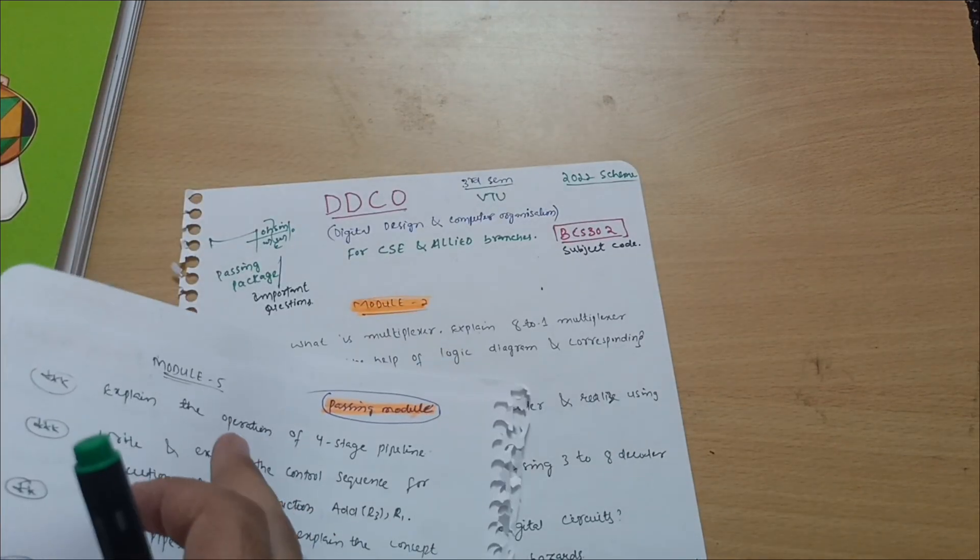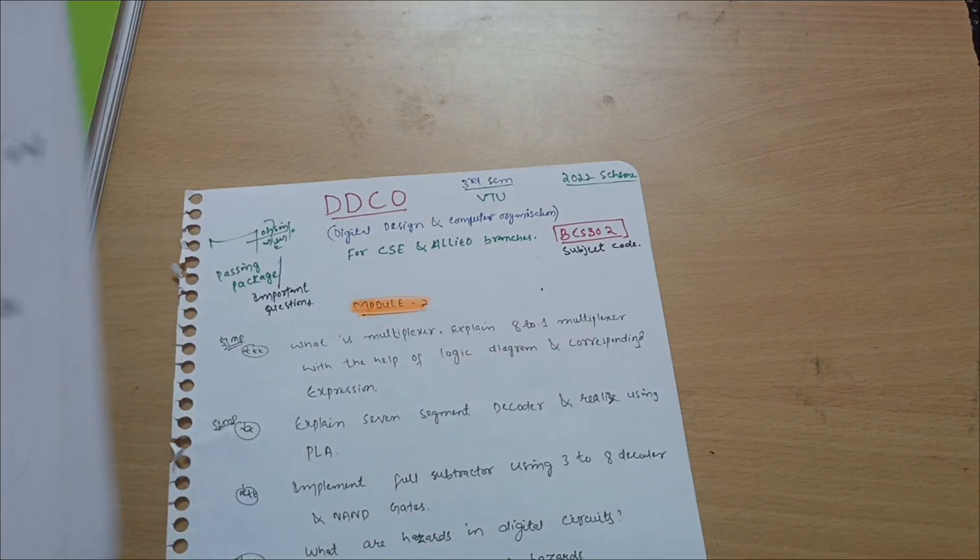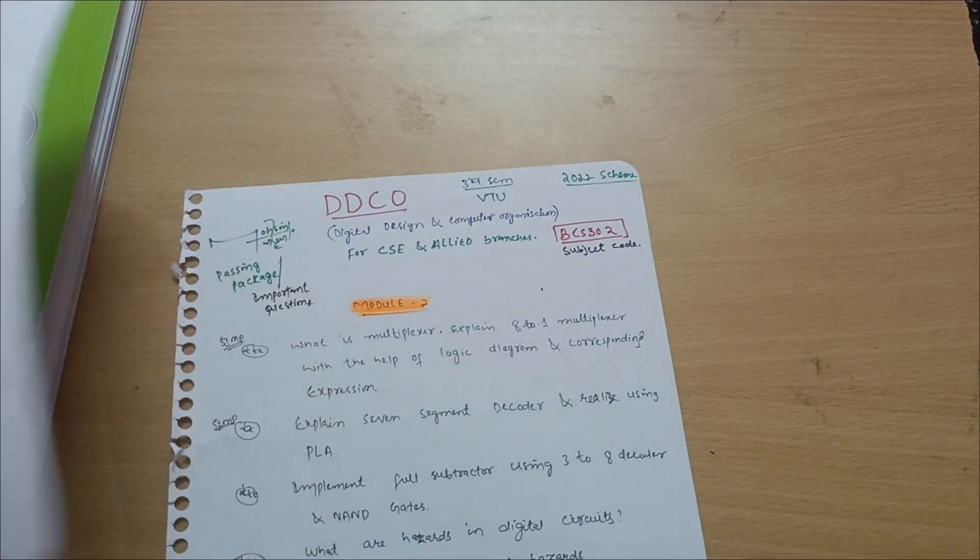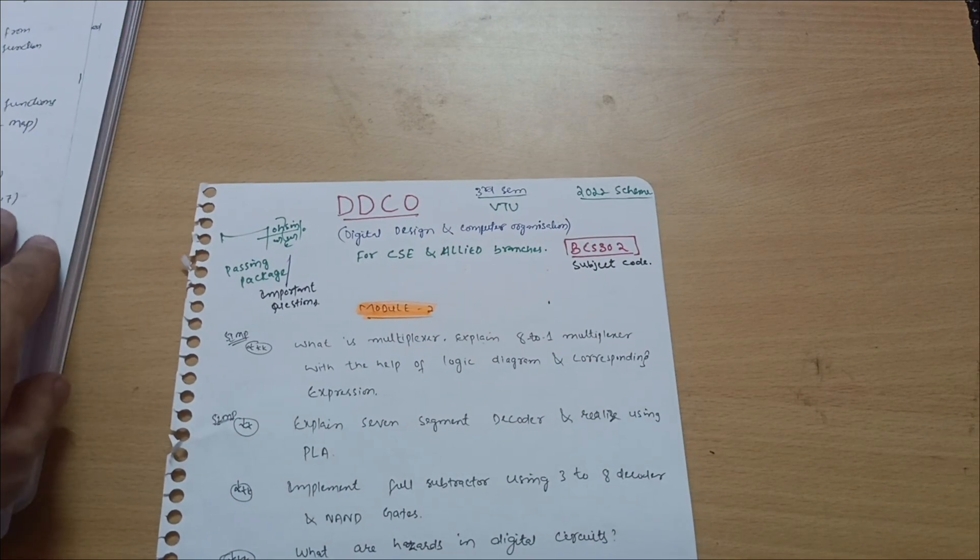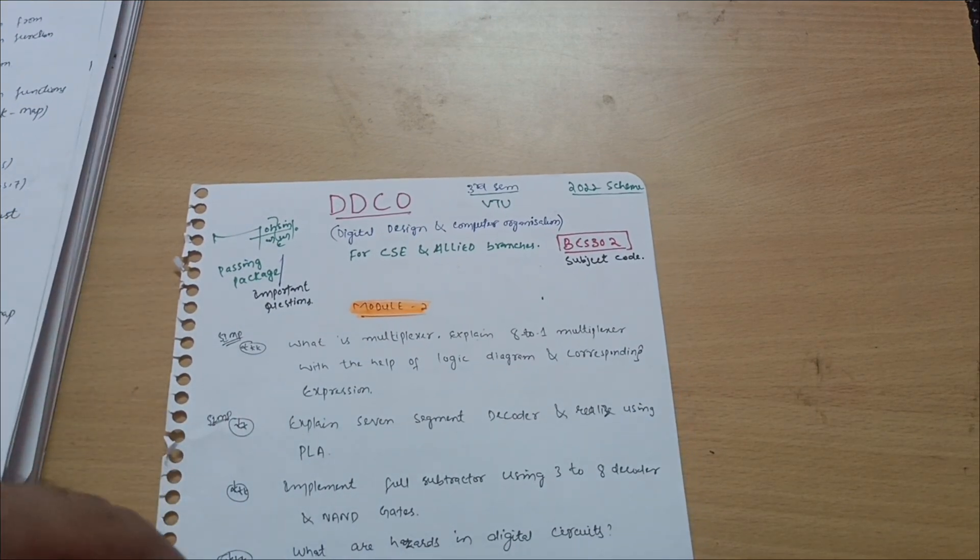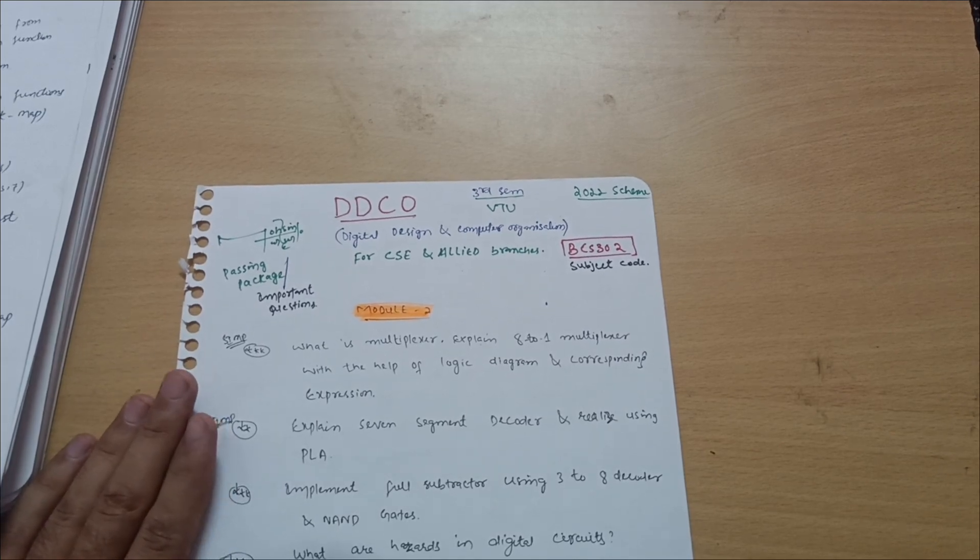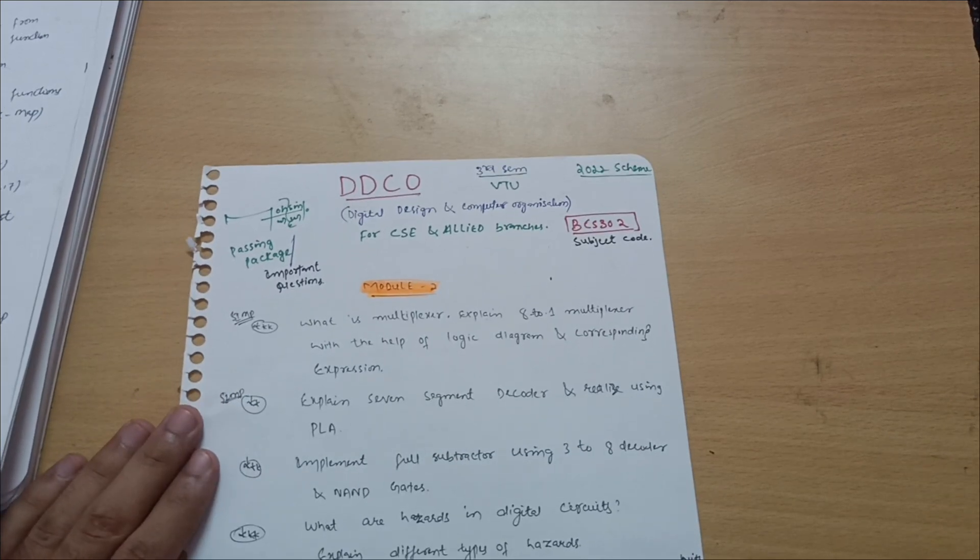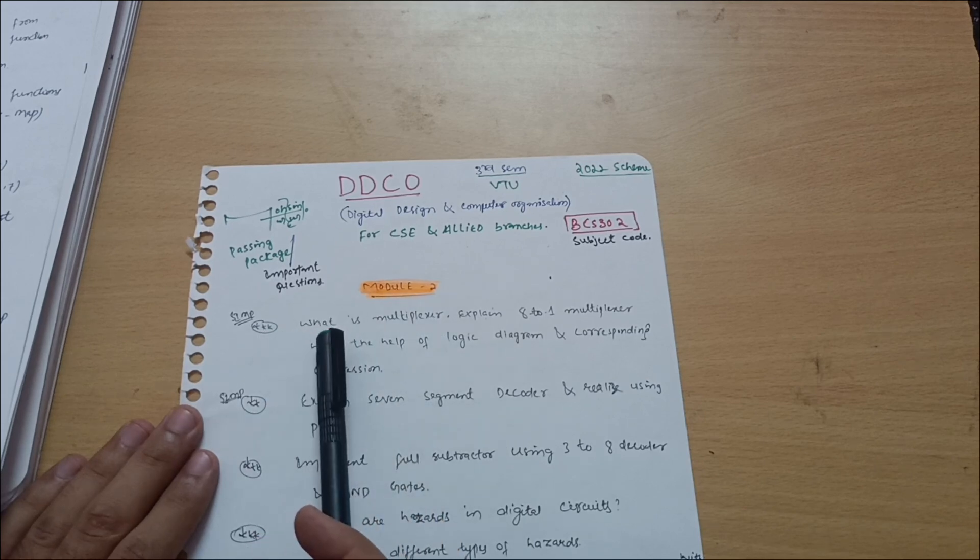Comparatively these are simpler than module two and module three. Let us discuss first the important questions for all the modules so that you can score well in this subject. If somebody is struggling, they can go for the passing only if they are really struggling for the subject.